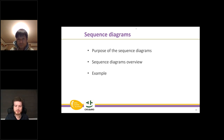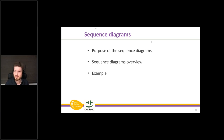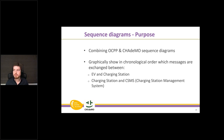I'll explain the sequence diagram part of what we've done, covering three things: the purpose, an overview of all the sequence diagrams we created, and a zoom into one example. The purpose was to graphically show how we combined the sequence diagrams from the OCPP and CHAdeMO specifications — both standards already have sequence diagrams that explain the flow, but now we want to show the full flow from car to charging station to CSMS to understand the whole picture and make it easier to understand what needs to be built.